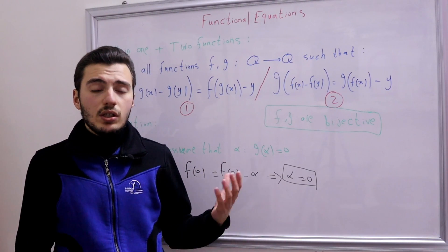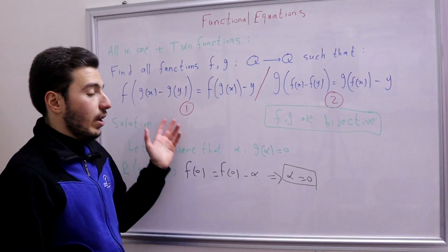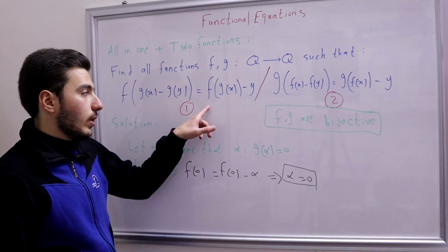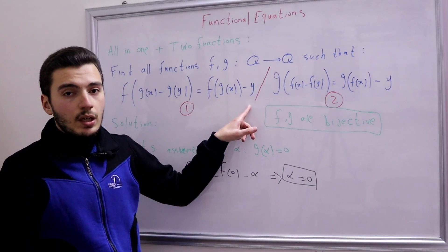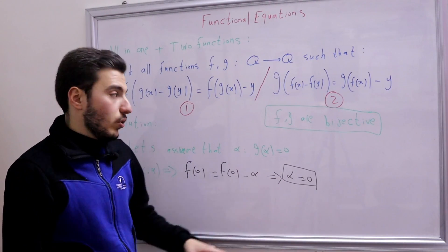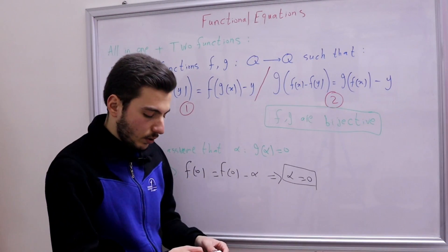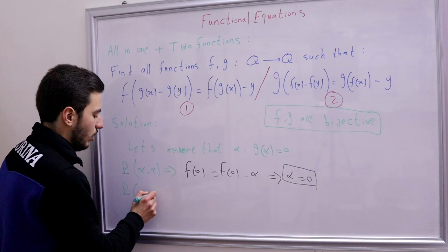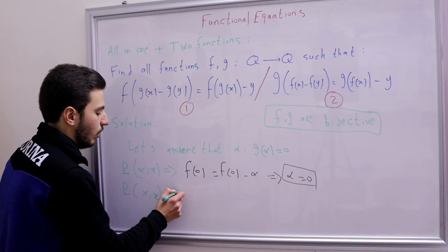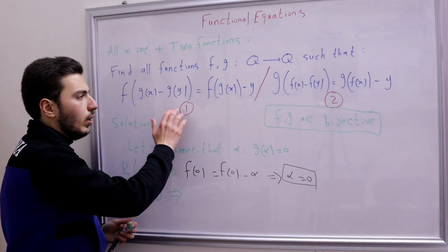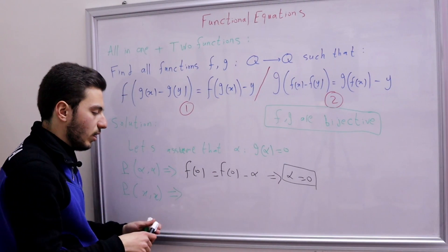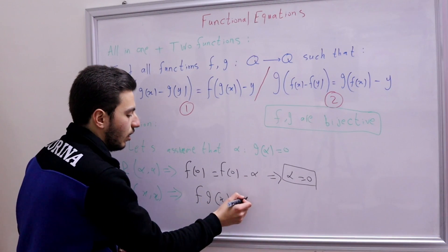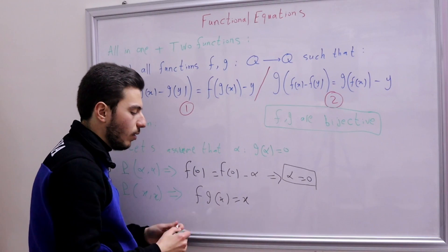Now we can revisit the substitution P(x,x). Previously it gave us f(g(x)) = x + f(0), but now we know f(0) = 0. So substituting P(x,x) gives us f(g(x)) = x. This is really powerful!